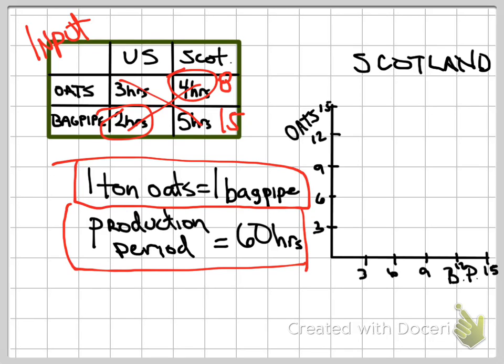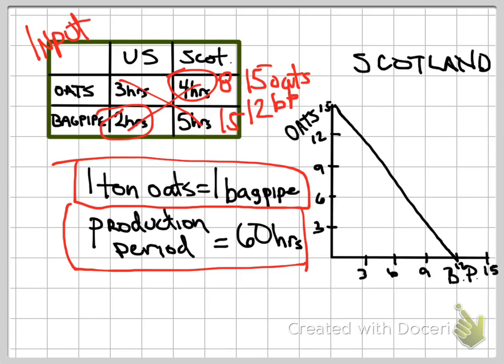That 60-hour production period helps us create a PPC for Scotland looking at their specialization before trade. If Scotland can produce one ton of oats every four hours, that means they could produce 15 tons of oats in that production period, or they could produce 12 bagpipes. What that would look like on a production possibilities curve is to simply draw those extremes — if Scotland is specializing in either of those goods, that is what the PPC would look like.